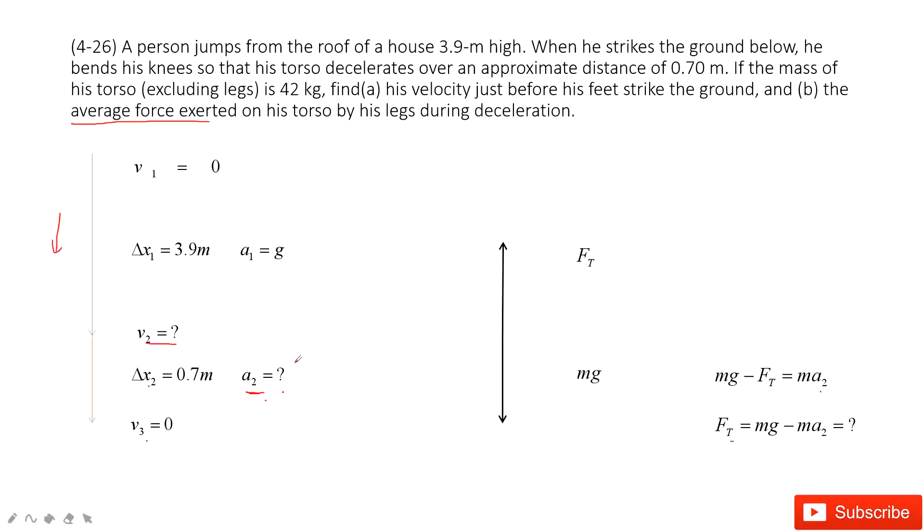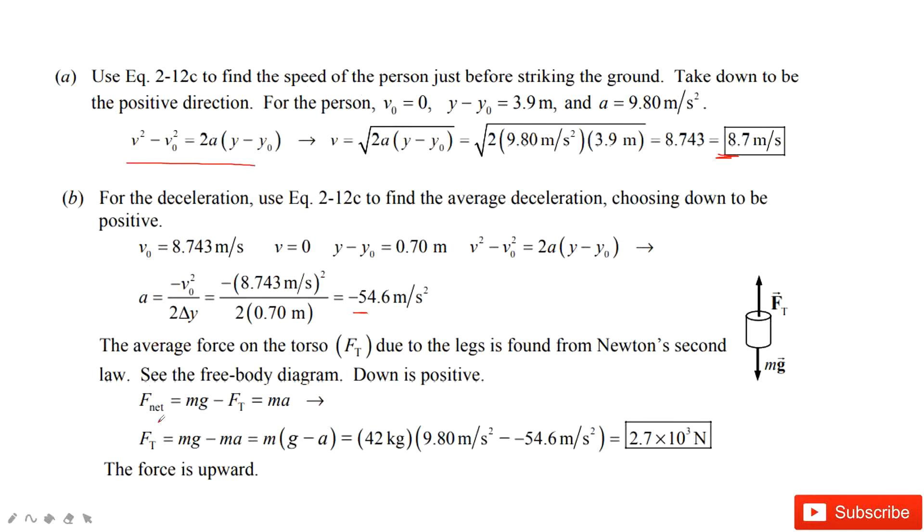And then, once we get a_2, we input in this equation, we get this force, average force acting on this person. So we use Newton's second law, the net force equals the mass times acceleration, to get the final force. This force is upward. Thank you.